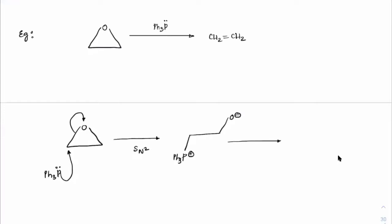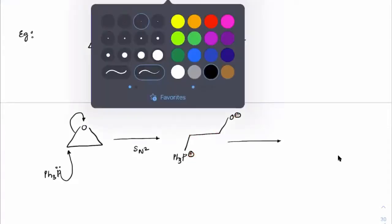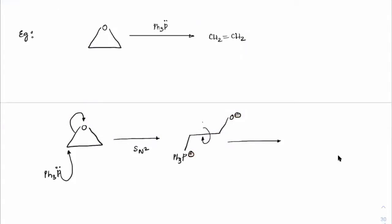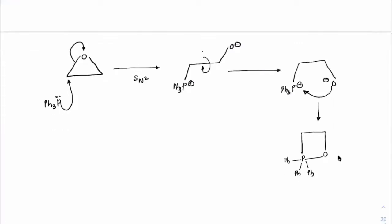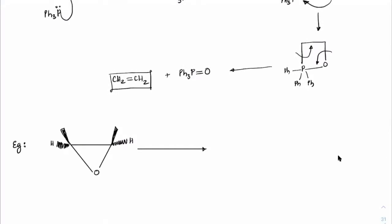Once we get O⁻ and Ph₃P⁺, the single bond rotates so that O⁻ is directed toward phosphorus to form P=O — again a four-membered ring is formed. Bond breaking then gives Ph₃P=O plus CH₂=CH₂. That is how the alkene is formed from an epoxide with Ph₃P.